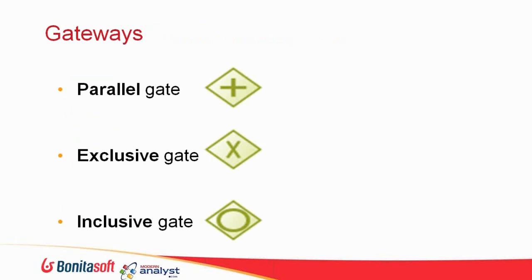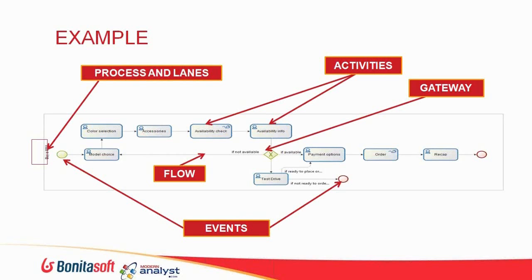You also need gateways, which alter the sequence flow. There are three kinds: Parallel gateways allow multiple tasks to happen at once. Exclusive gateways, which we'll see in the demo, mean all flow enters the gateway and only one path executes based on a condition. Inclusive gateways allow one or more paths to occur based on a condition. Here's an example showing all the different elements together — the pool, lanes, tasks, flow arrows, events, start and end, and a gateway.